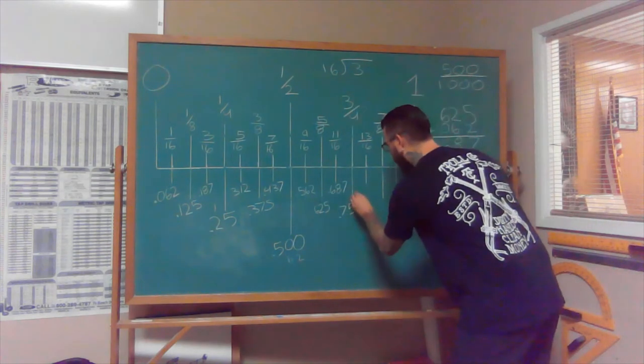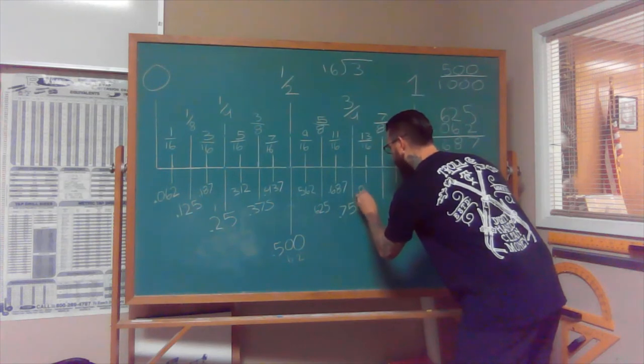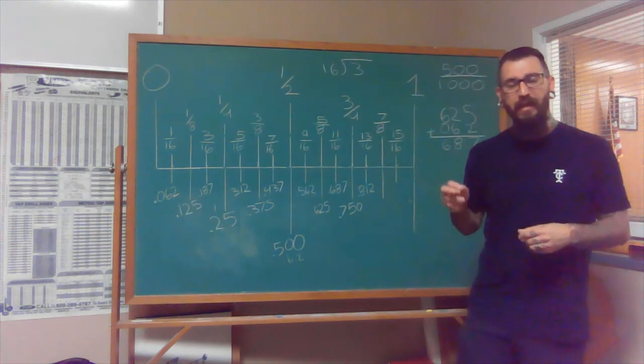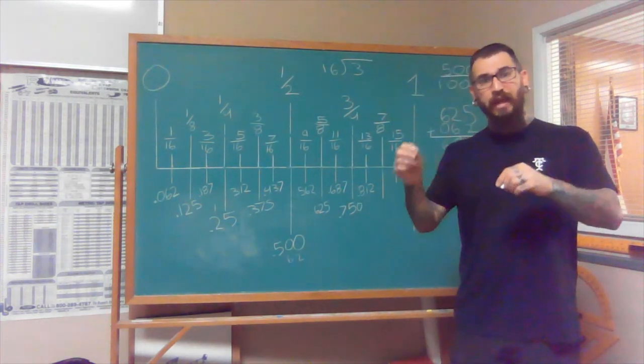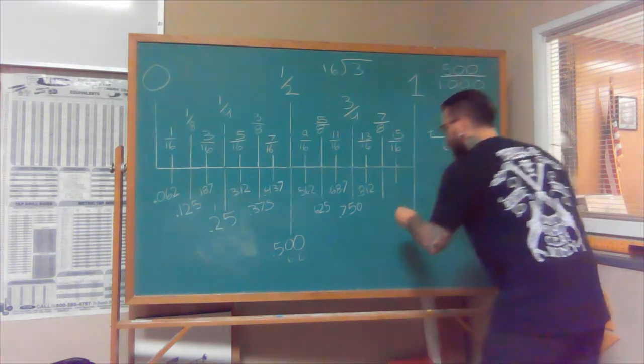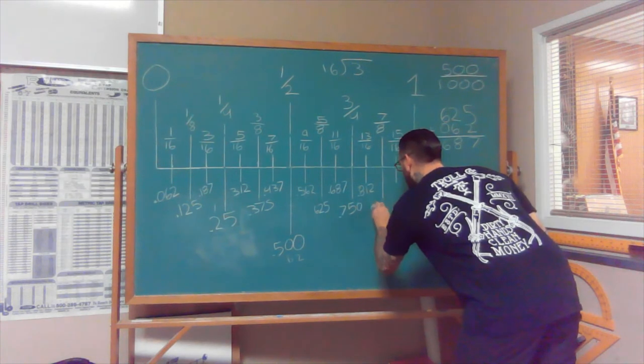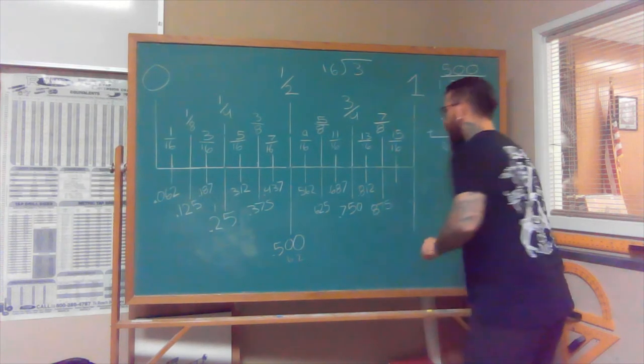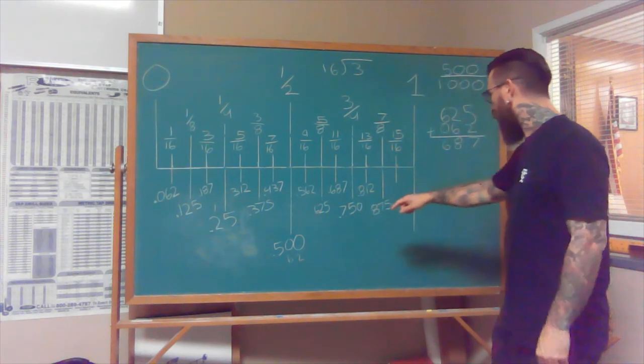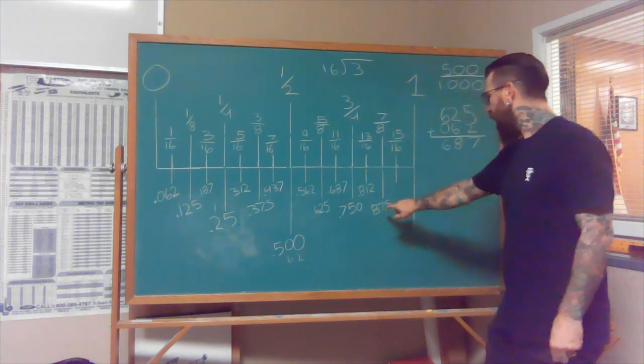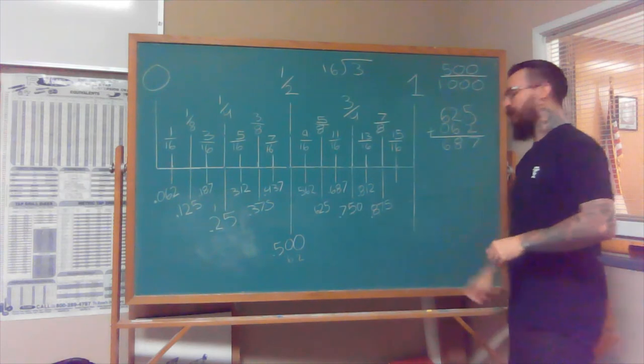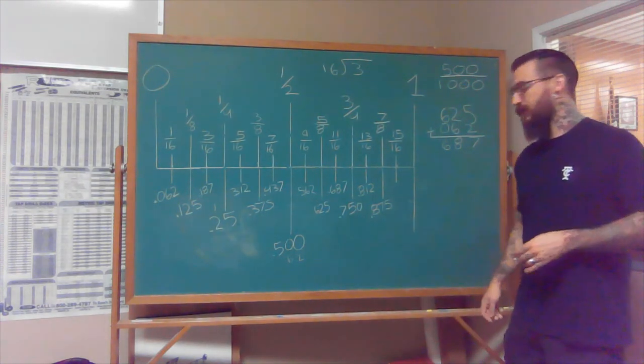Thirteen sixteenths is 0.812. Seven eighths, I just have in my head, it has the numbers in it instead of 7-8 or 780 thousandths, it's 8-7-5. Really all we have to do is add 125 to 750, and that gives us our 0.875. And lastly, 15 sixteenths is 0.9375.